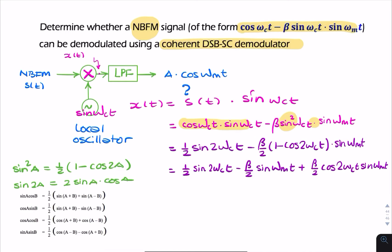So we've got ½ sin 2ωct - β/2 sin ωmt - -  + β/2 cos 2ωct sin ωmt. This is all x(t). So that's before the low-pass filter. Now, what happens when you have cosine times sine? Cosine sine is sine the sum and sine the difference. Now remember, we have ωc, which is much bigger than ωm. So ωc + ωm and ωc - ωm will all be much larger than ωm.